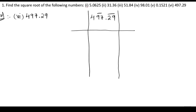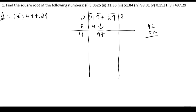We put bars on every two digits. The first group is 04. For 4, we know the square of 2 is 4. So we write 4 here. 2 plus 2 is 4. We bring 97 down. In the 4 table, the nearest number — we know 4 times 8 is 32, so 42 into 2: 2 times 4 is 8, giving 84.